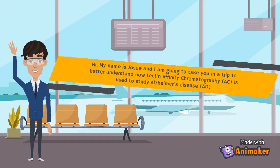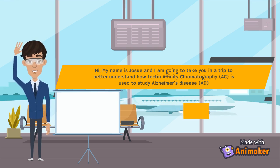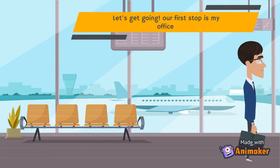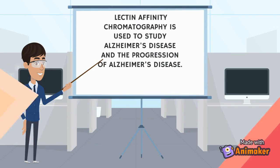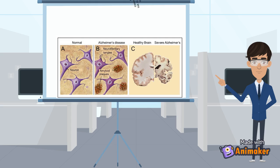Hey, my name is Jose and I'm going to take us on a trip to better understand how we can use lectin affinity chromatography to study Alzheimer's disease. And alongside us will be our trustworthy whiteboard. All righty, and with that, let's get going. Our first stop will be in my office. As I had mentioned previously, lectin affinity chromatography is a technique used to study Alzheimer's disease and its mechanisms and how it progresses over time. Now let's talk about the disease itself.